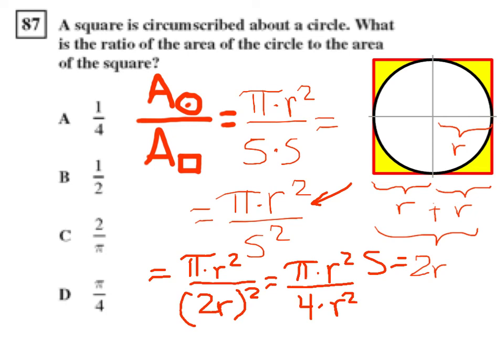Well if you notice, we can actually cancel out those r squareds. They will cancel with each other forming one. One times pi will leave you with pi on the top. And one times four will leave you with four on the bottom. So you'll be left with a ratio of pi over four. And if you notice, that is our answer to question D.